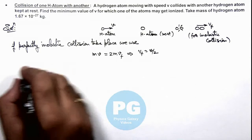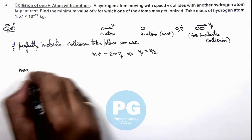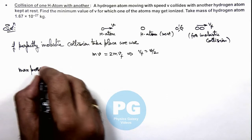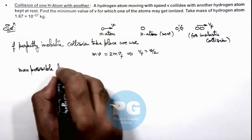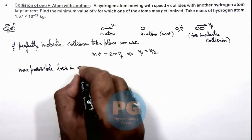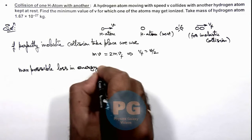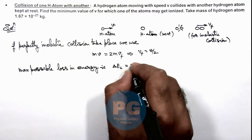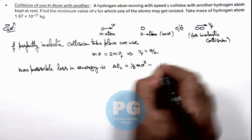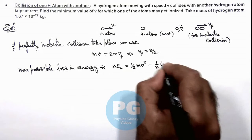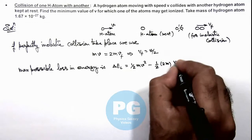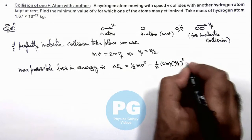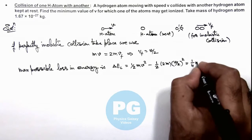So in this situation we can calculate the maximum possible loss in energy. ΔEL can be written as initial energy was ½mv² minus final kinetic energy is ½(2m)(v/2)², which equals ¼mv².